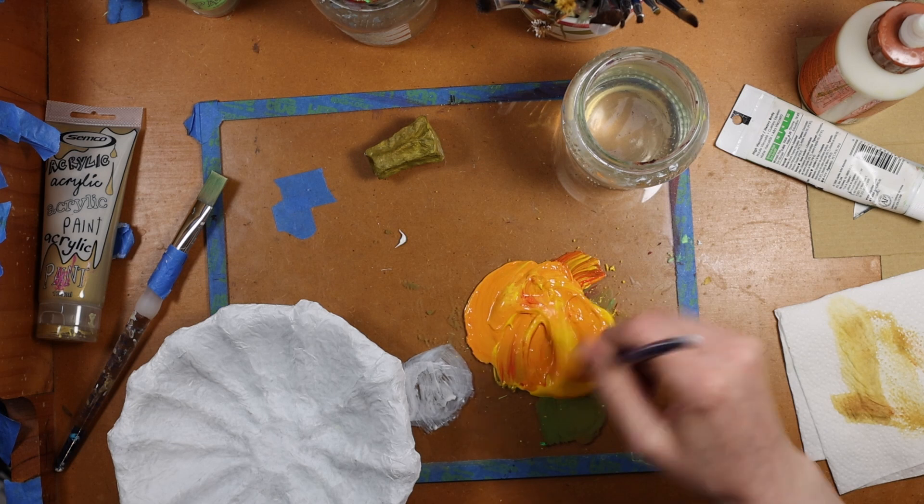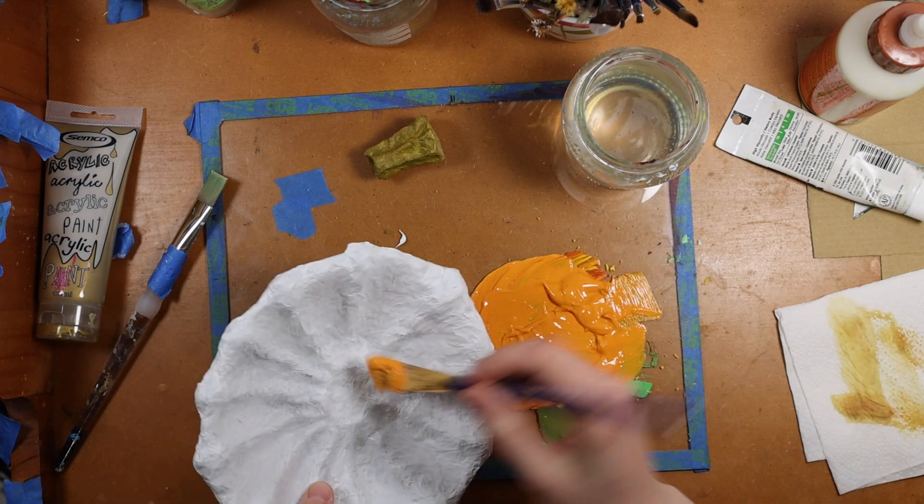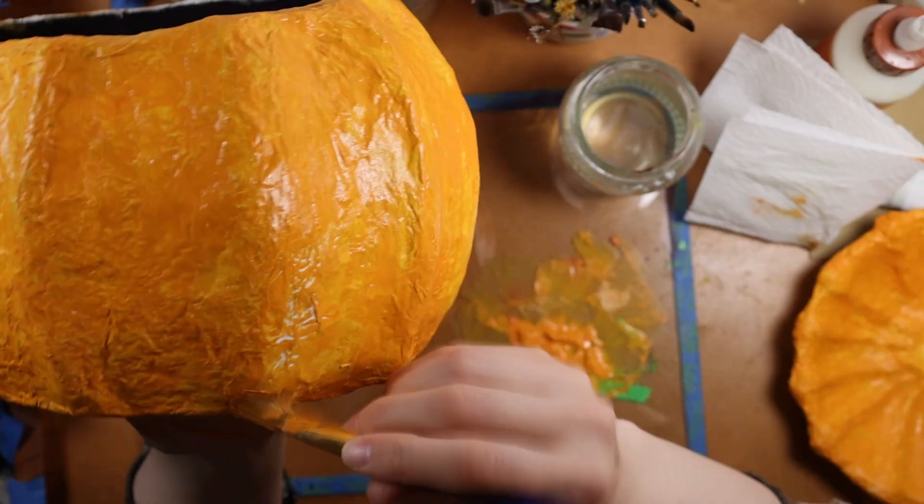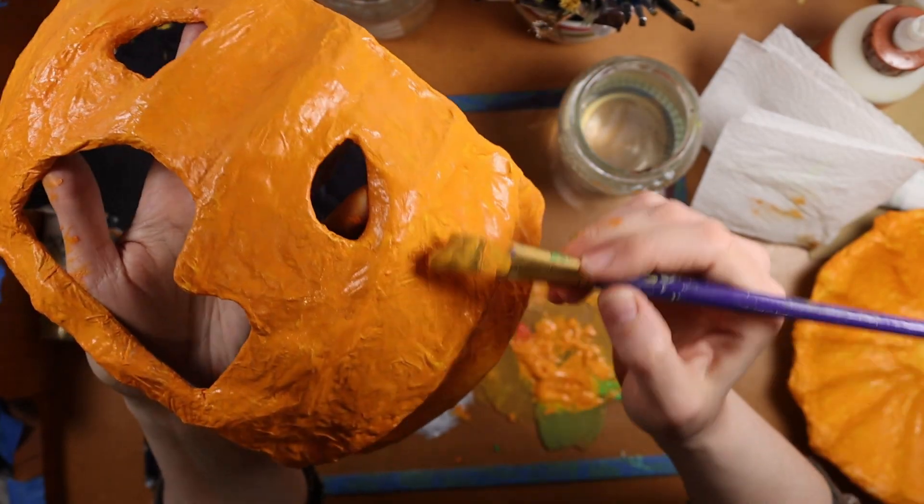I mix a giant glob of ketchup and mustard, and oh, that color is so satisfying. I paint it over once, and again, and a third time. And here I thought I was ready to animate.